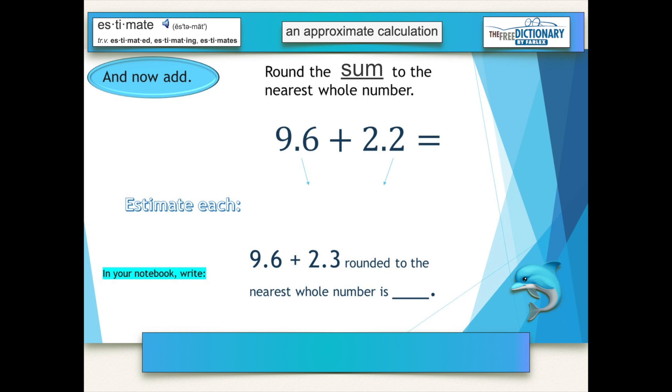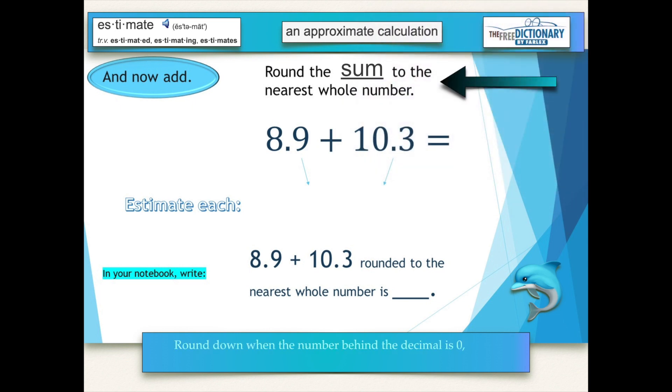Round nine and six-tenths plus two and two-tenths, and then add them together for a good estimate of their sum. Eight and nine-tenths plus ten and three-tenths. Just pause the video as needed.